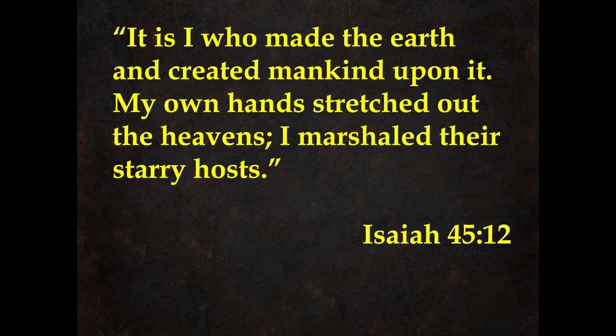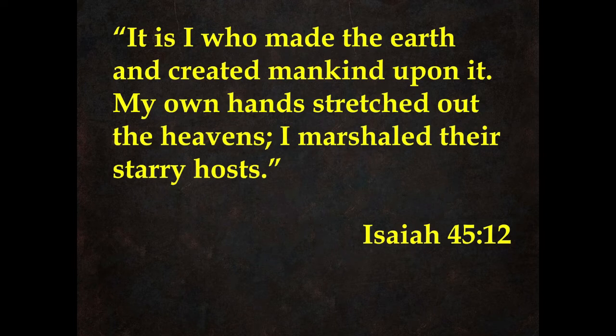Isaiah 45: 'It is I who made the earth and created mankind upon it. My own hands stretched out the heavens. I marshaled their starry hosts.' The word 'marshaled' is what you do with an army — you command it to go where it's supposed to go. A marshal outranks even a general or admiral. Napoleon's marshals outranked everybody. That's what God does with the stars — he just tells them all where to go. And in Job, he whistles for them to come home at night like cows.